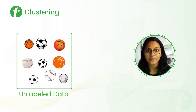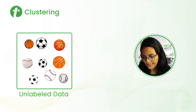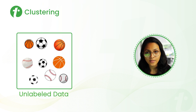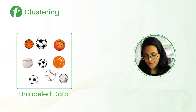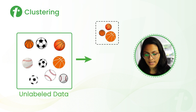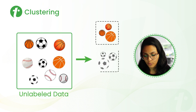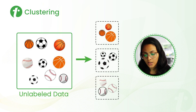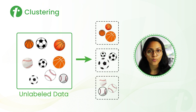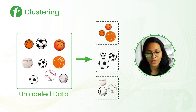Let's understand clustering with this example. We have unlabeled data — in this case, a group of balls. When we provide this data to the model, it divides them into three groups: a group of basketball, a group of football, and a group of baseball. The model does this by finding some similarities or dissimilarities from the given data.